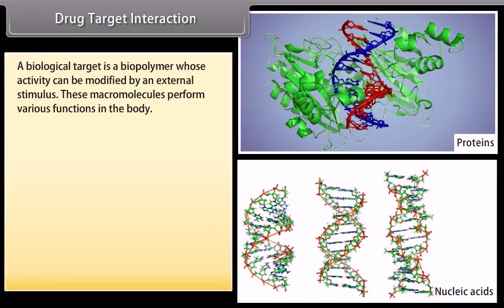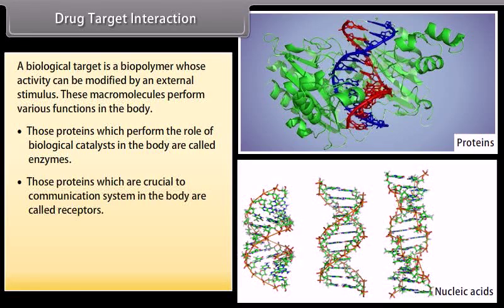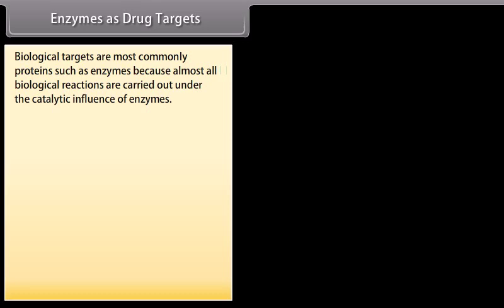A biological target is a biopolymer whose activity can be modified by an external stimulus. Those proteins which perform the role of biological catalysts are called enzymes. Those crucial to the communication system in the body are called receptors. Those that carry polar molecules across the cell membrane are called carrier proteins, and nucleic acids carry coded genetic information for the cell. Enzymes are the most commonly used drug targets because almost all biological reactions are carried out under their catalytic influence.